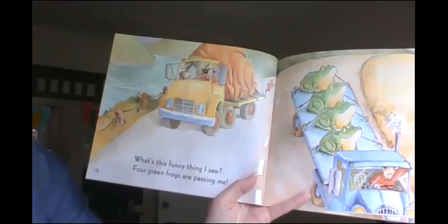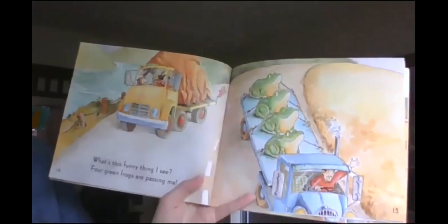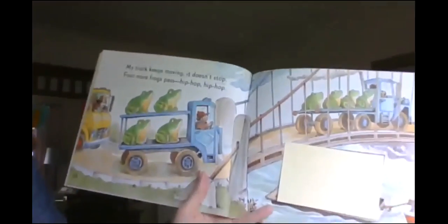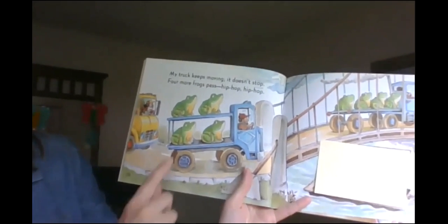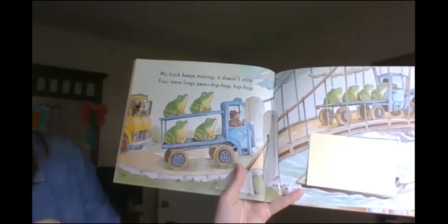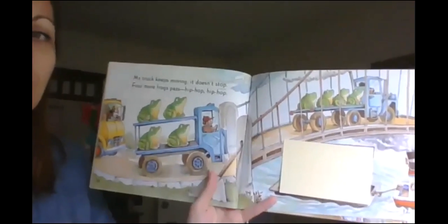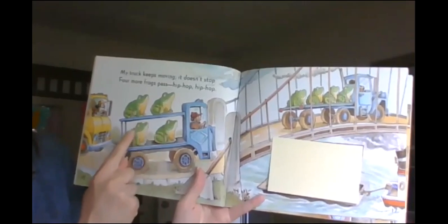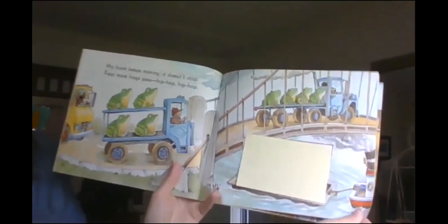So six and one more is seven. That's a funny thing to see. Four green frogs are passing me. These look like really big animals. My truck keeps moving. It doesn't stop. Four more frogs pass. Hip hop, hip hop. So if we have four, let's practice counting on. After four would be five, six, seven, eight.